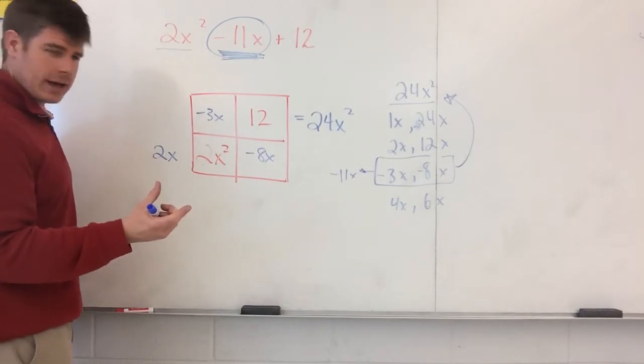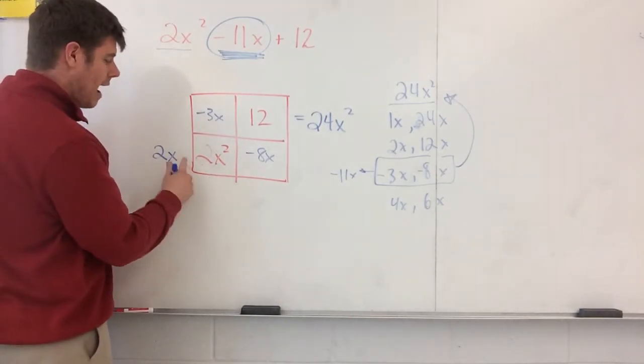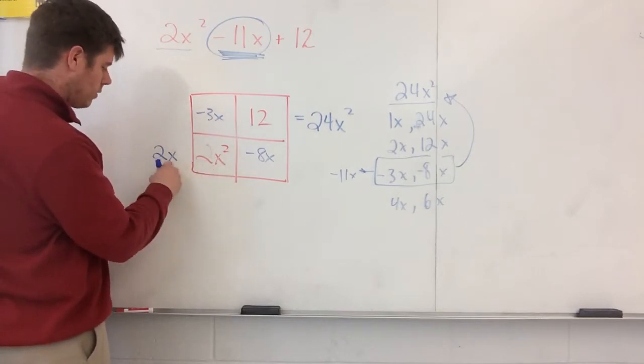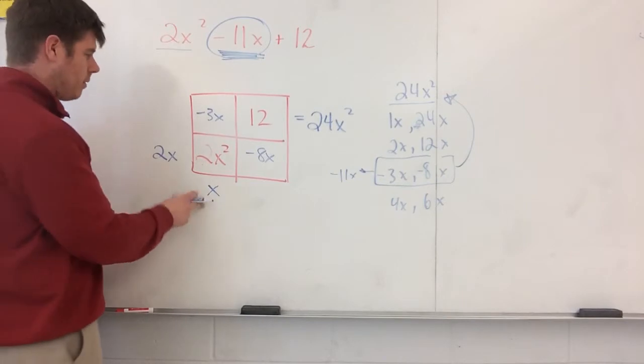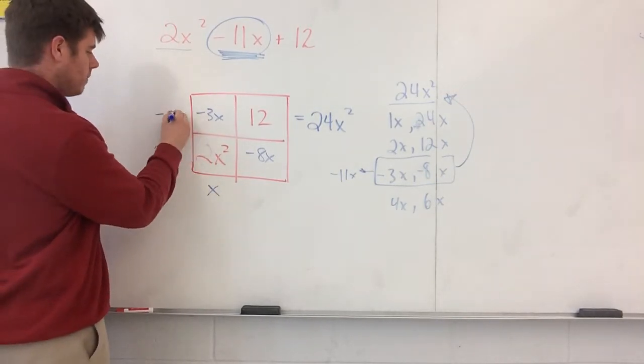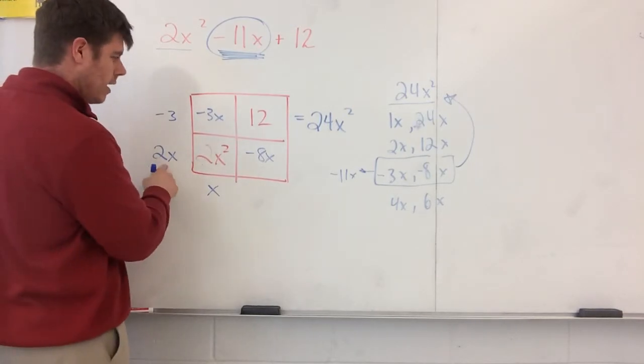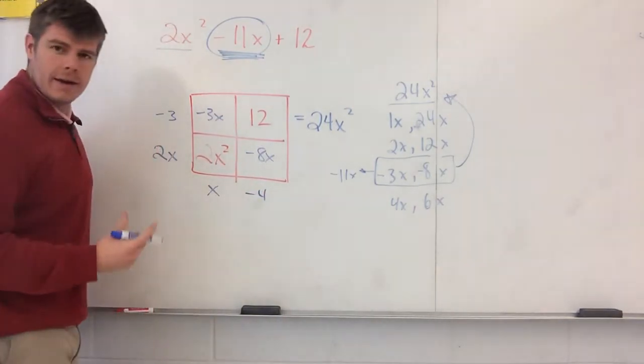So the next thing I look at is I come down here, and I go, how do I complete this grid? Well, 2x needs another x. So boom, there it is. So there's that one. Then I go to this one. x times what makes negative 3x? Negative 3. 2x times what makes negative 8x? Well, negative 4. And there you have it.